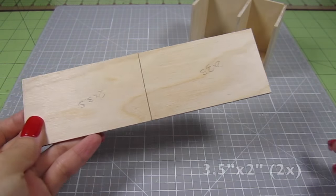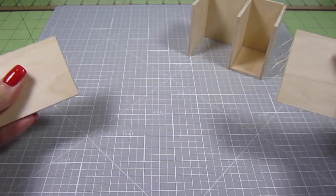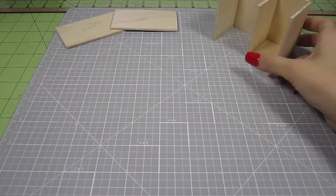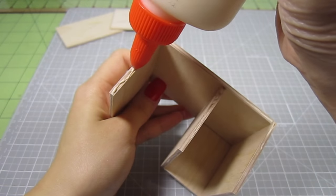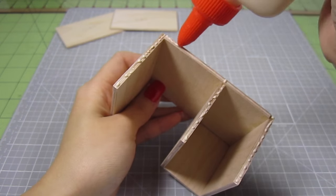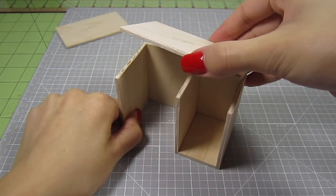Now cut out 2 3 1⁄2 by 2 inch rectangles. One will be the top of the desk and the other one will be the back of the bookshelf. Let's put the top of the desk on first. Add wood glue. Put it on. It's super easy.